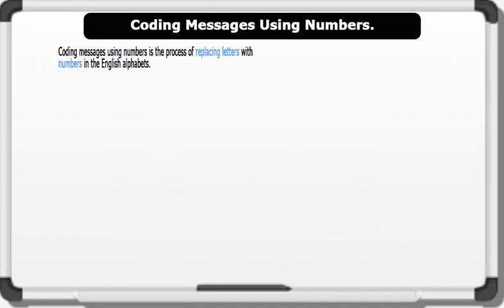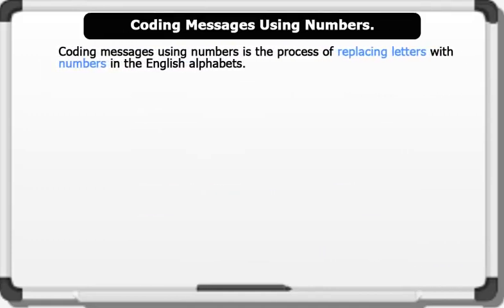Coding Messages Using Numbers is the process of replacing letters with numbers in the English alphabet. In the Roman number system, we see letters like I, C, M, D, etc. being used to represent numbers.